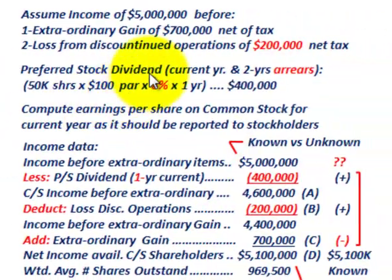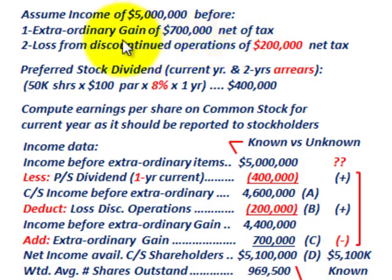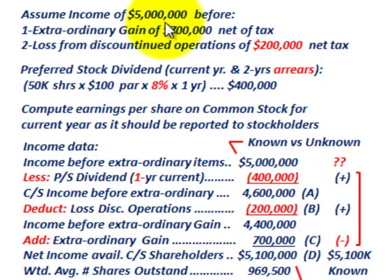In our example, we had income for the year of $5 million, and that's before an extraordinary gain of $700,000 — net of tax. And then we have a loss from discontinued operations of $200,000, again net of tax. So our starting point is net income of $5 million before this extraordinary gain and this loss from discontinued operations.